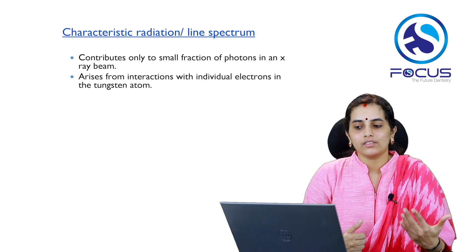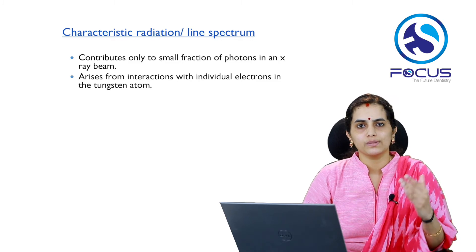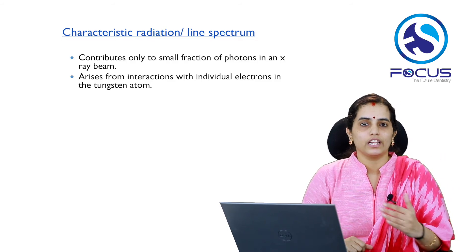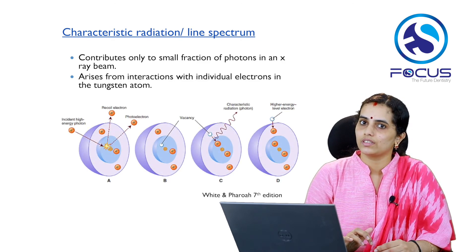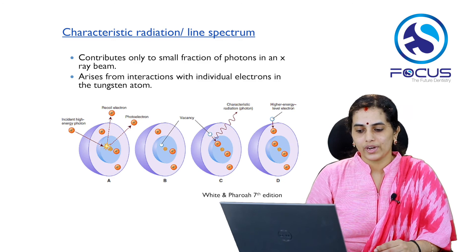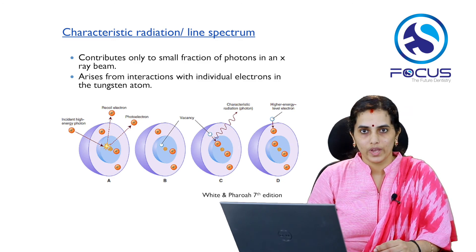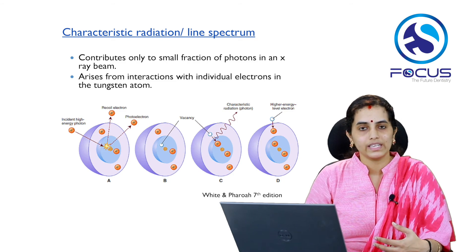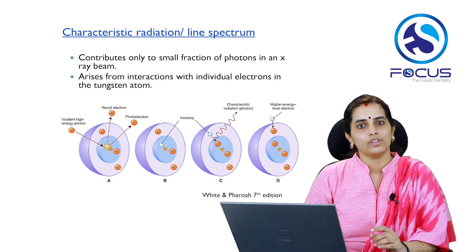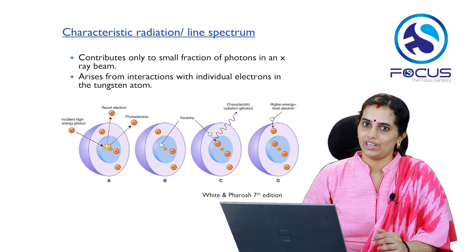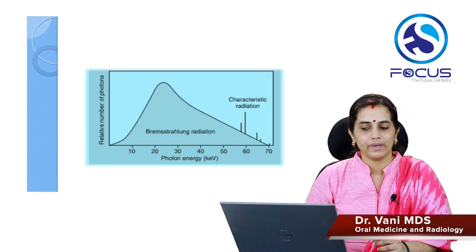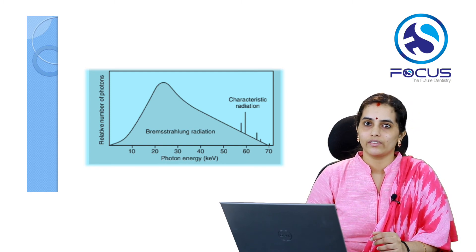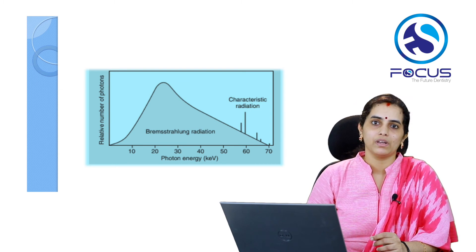Characteristic radiation, or the line spectrum, contributes only a small fraction of photons in an X-ray beam. It arises from the interaction of electrons with individual inner orbital electrons of the tungsten atom. The incident high-energy electron strikes an inner orbital electron and ejects it, creating a vacancy. Electrons from higher energy levels then fill the vacancy, releasing energy corresponding to the difference in energy levels of the orbitals. The graph shows that Bremsstrahlung radiation produces the maximum number of photons, while characteristic radiation contributes only minimally.